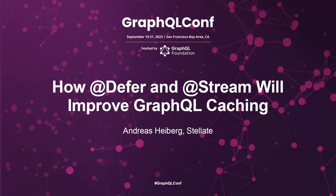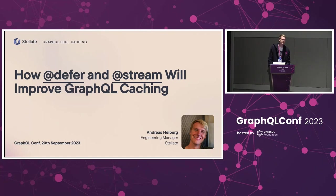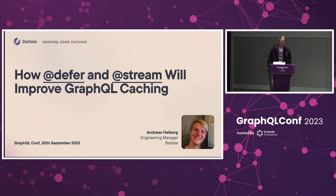I wanted to talk today about GraphQL caching, and specifically the future potentials for creating a more GraphQL native caching system by using Defer and Stream. My name is Andreas Heiberg. I'm the engineering manager at Stellate, and we help build tools to operate GraphQL servers at scale. One of those tools is an edge cache or a CDN specifically for GraphQL, so that's why we've been thinking about it and why I wanted to share with you today.